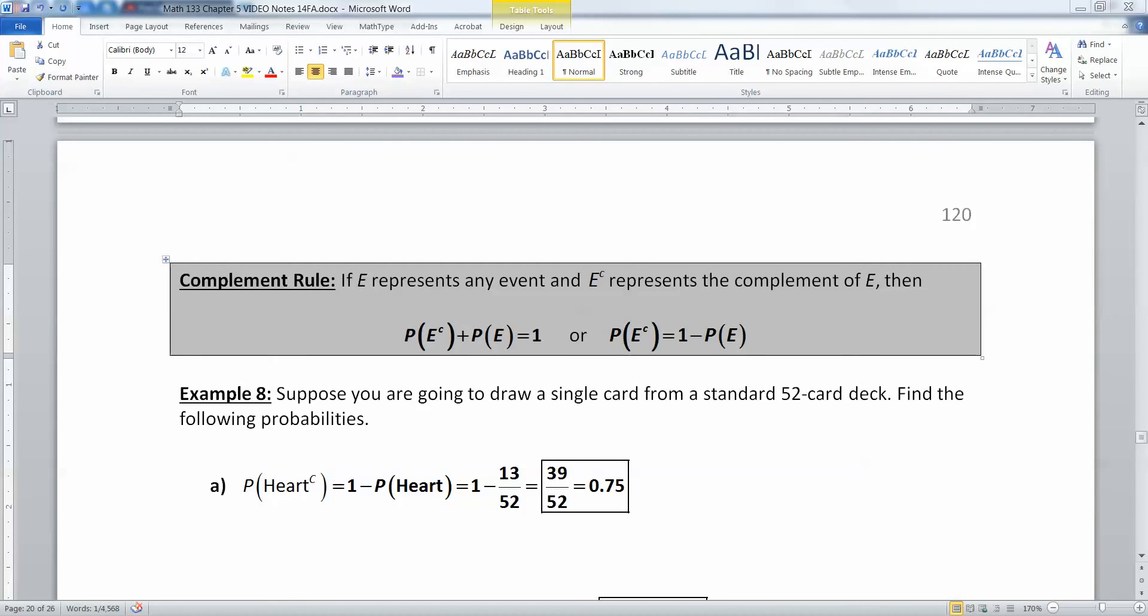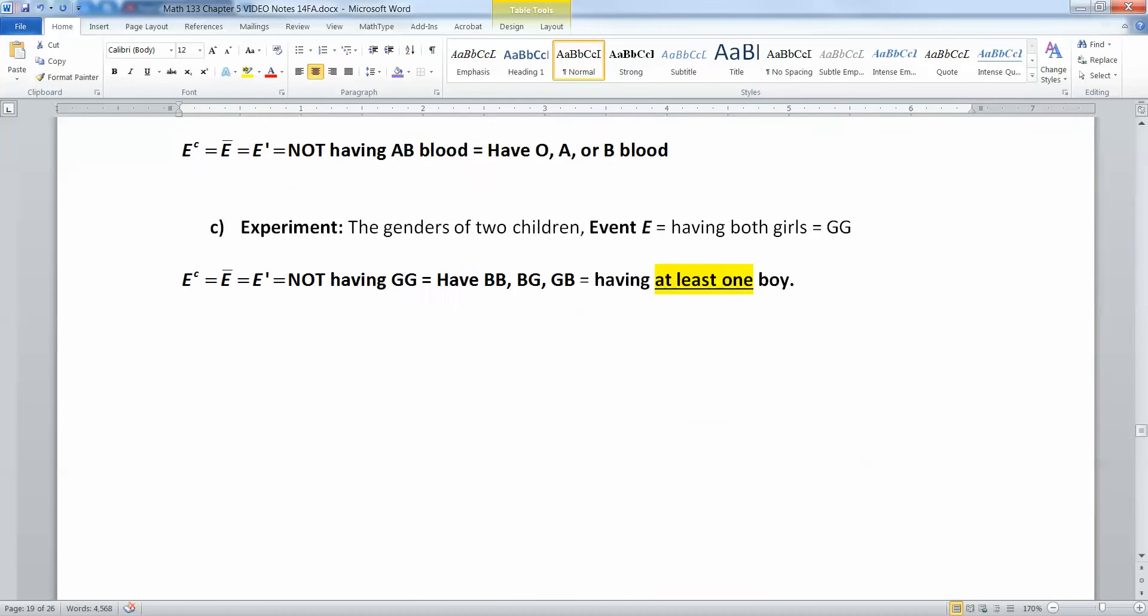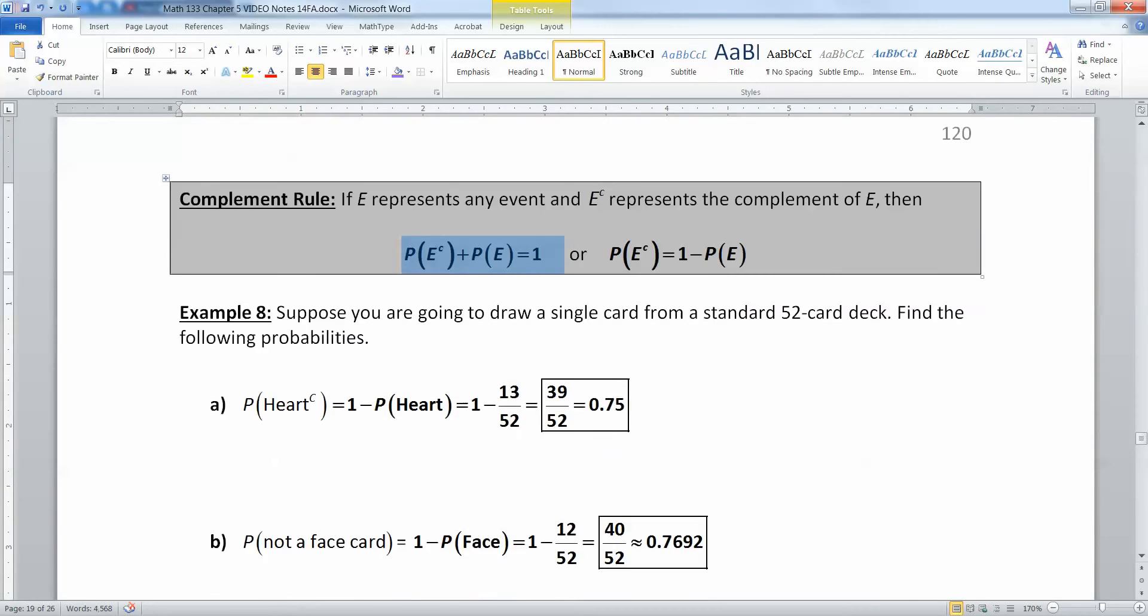So now how does that help us? What we're getting at here is the same rule that we learned back in section 5.1, which is basically the sum of the probabilities has to be one. If you have an event E, if you have your spades in here and all your non-spades out here, they've got to make 100% by the end of it.